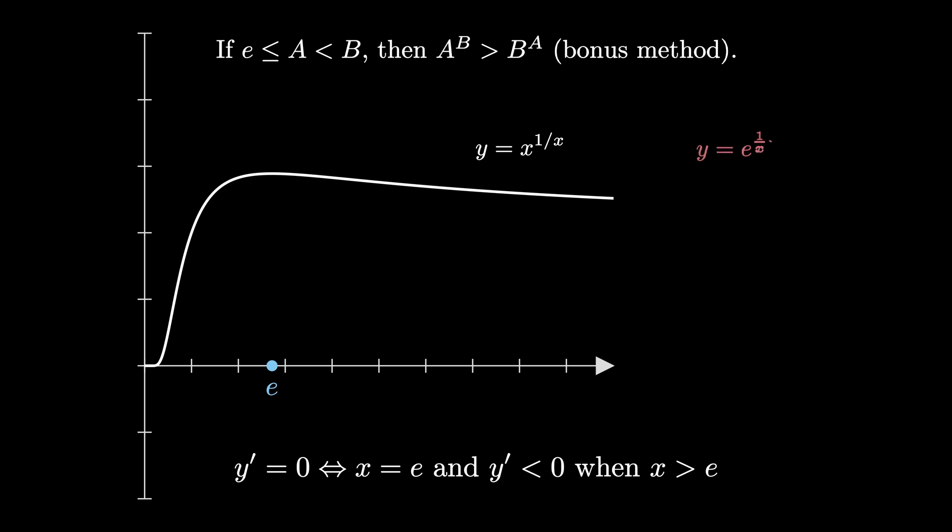Unfortunately, this technique requires you to know that y equals e to the 1 over x times natural log of x using exponential and logarithmic rules, and then requires you to use the chain rule and the product rule to determine that the derivative y prime is negative x to the 1 over x times the natural log of x, plus x to the 1 over x, all divided by x squared, a quite complicated derivative.